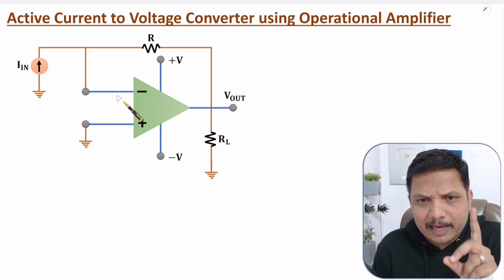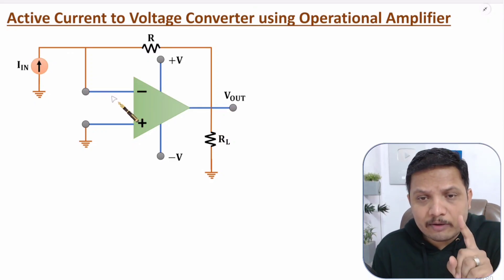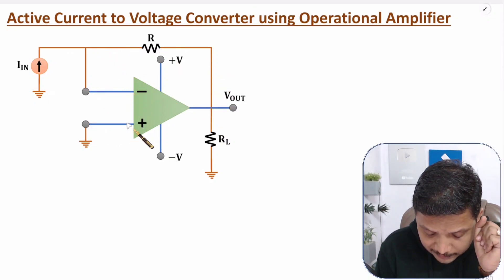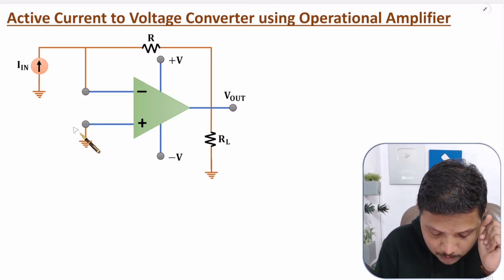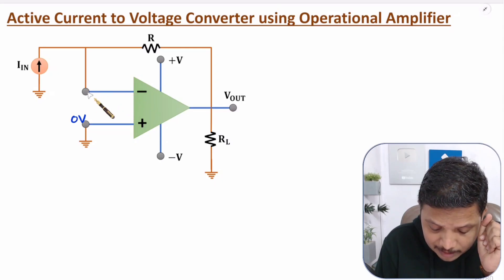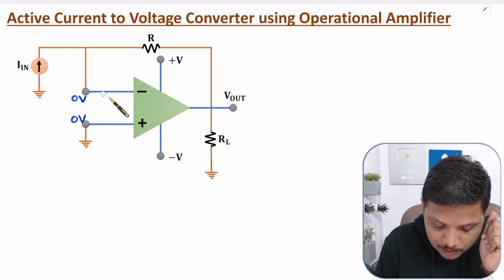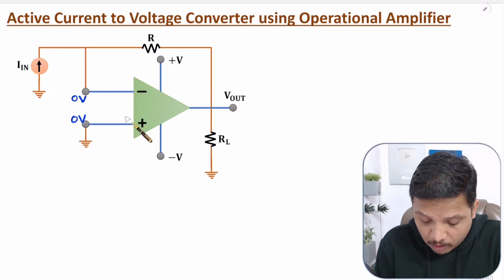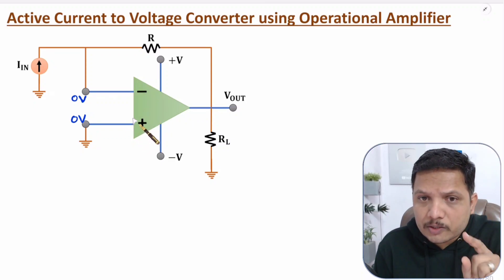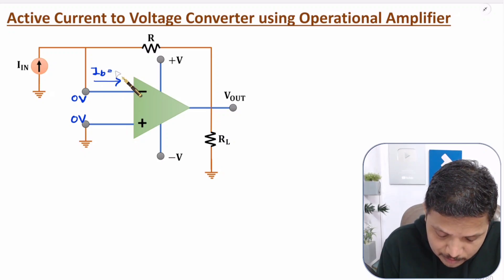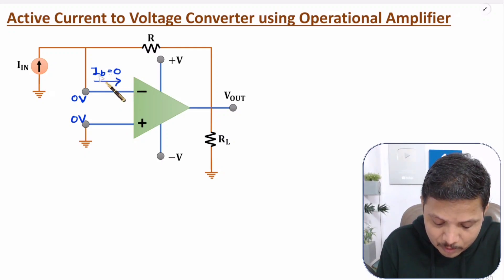With negative feedback, there is the virtual short concept and the virtual ground concept. In negative feedback, if the positive terminal has zero voltage — since the positive terminal is connected to ground — then with the inverting terminal, voltage should also be zero. That is the virtual ground concept. One more basic to know: the operational amplifier has two inputs, and its input impedance is very high, in the range of mega-ohms. Because the input impedance is very high, the current going into the op-amp input is negligible, or almost zero.